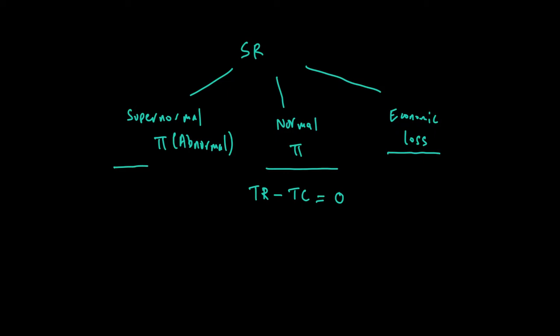Supernormal or abnormal profit is a scenario where you are looking at profit over and above normal profit — in other words, profit over and above the opportunity cost of the resources used in production by the firm. Hence, when total revenue is greater than total economic cost, the firm is making abnormal or supernormal profits. The last scenario is that of an economic loss, where total revenue is actually less than total cost.